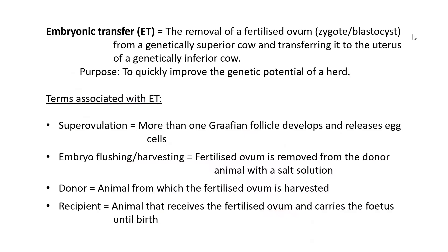Embryonic transfer is basically the removal of a fertilized ovum — it can either be at the zygote stage or the blastocyst stage, meaning the egg cell has just been fertilized with a sperm cell but is not yet an embryo. So it's in the early stages of development between a zygote and an embryo. This fertilized ovum is removed from a genetically superior cow and transferred to the uterus of a genetically inferior cow.